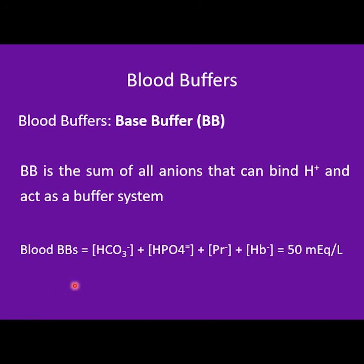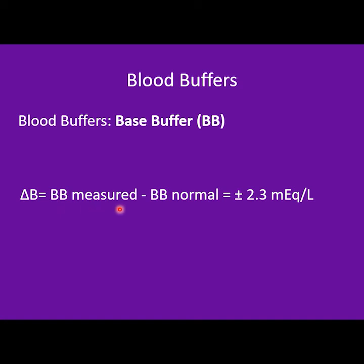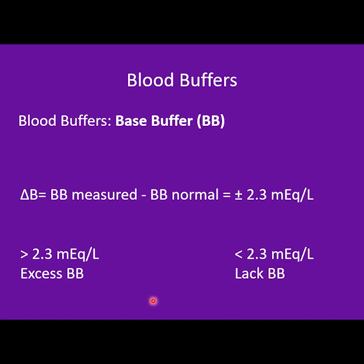In blood, the buffer base includes the concentrations of bicarbonate, phosphate, proteins, and hemoglobin. In normal conditions, it should be approximately 50 mEq per liter. You can also calculate the difference between the measured buffer base and the normal buffer base; this difference should be roughly 2.3 mEq per liter. If you measure more than 2.3 mEq per liter, your patient has an excess of buffer base, which can occur in metabolic alkalosis. If less than 2.3 mEq per liter, the patient lacks buffer base, which happens in metabolic acidosis.